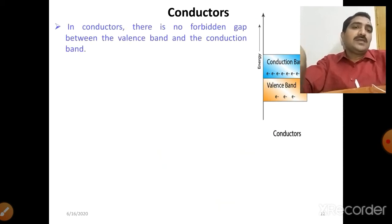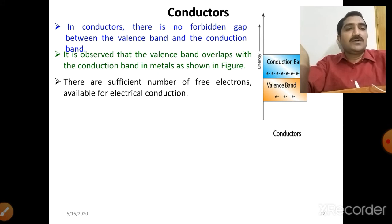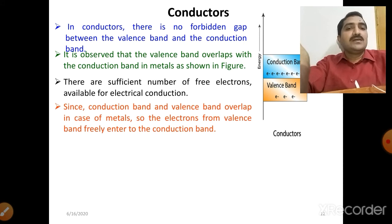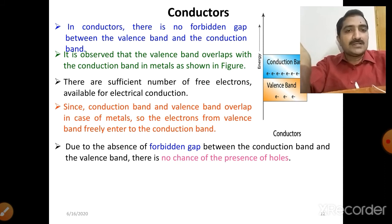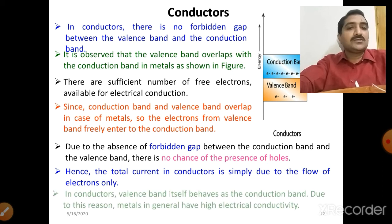In conductors, there is no forbidden gap between the valence band and the conduction band — the two bands overlap, as observed in metals. There are sufficient free electrons available for electrical conduction. Electrons from the valence band freely enter the conduction band. Due to the absence of the forbidden band gap, there are no holes in conductors, unlike semiconductors. In semiconductors, current is due to both electrons and holes, while in conductors, current is due to electrons only. This is why metals generally have high electrical conductivity.